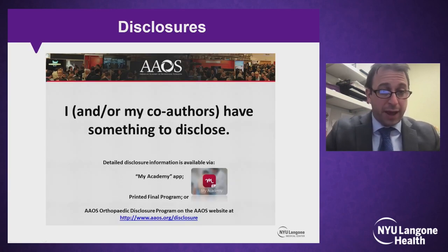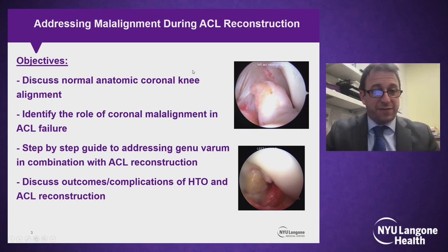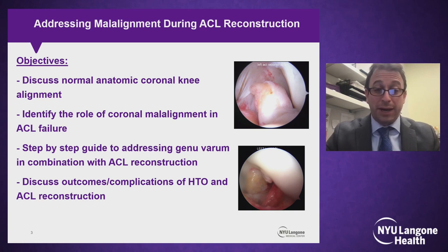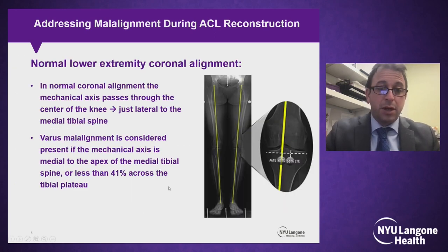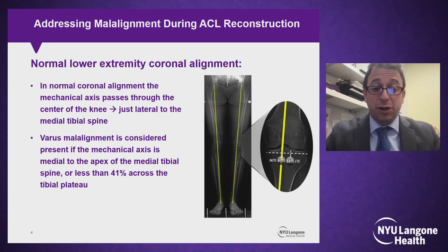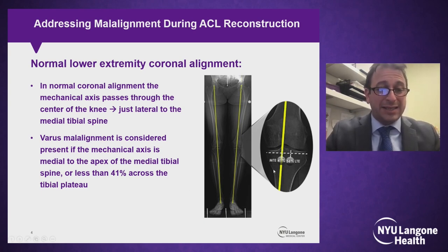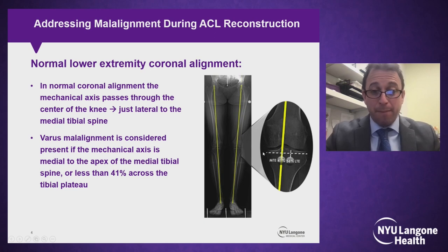I have a few disclosures — you can find them on the AAOS website. In the next 10 to 15 minutes, we'll discuss normal anatomic coronal knee alignment, the role of coronal malalignment in ACL failure, a step-by-step guide to addressing genu varum combined with ACL reconstruction, and the outcomes and complications of combining these two procedures. In a normal lower extremity, coronal alignment is defined by the mechanical axis connecting the center of the femoral head with the center of the tibial plafond, which typically passes just lateral to the medial tibial spine. Varus malalignment is defined when this mechanical axis is medial to the apex of the medial tibial spine, or less than 41% across the tibial plateau measured from its medial aspect.